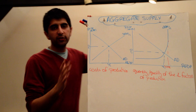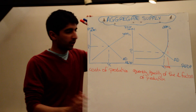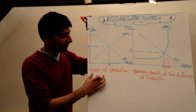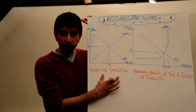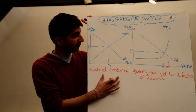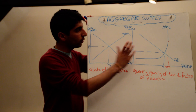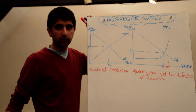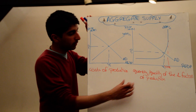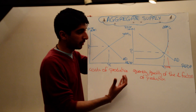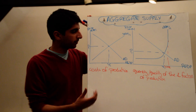You can have two different types of aggregate supply. Short-run aggregate supply, which is affected by the costs of production for firms in the macroeconomy. And you also have long-run aggregate supply, which is affected by the quantity and quality of the factors of production available.